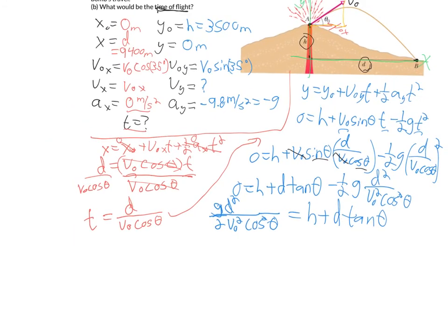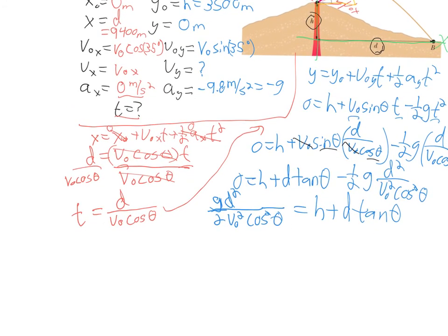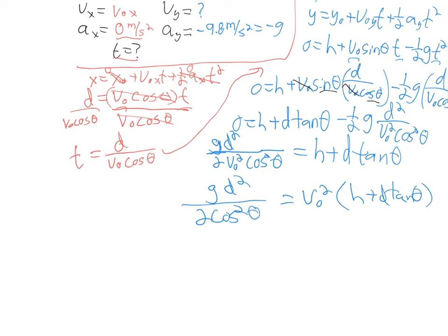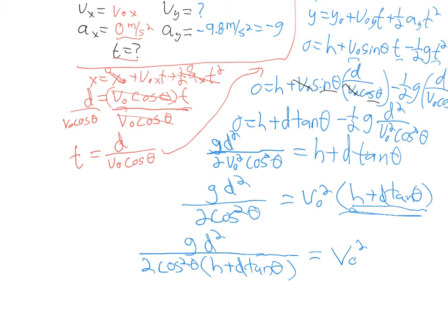So I have 0 equals h plus, still have my d. Don't forget that. d times the tangent of theta. All right, nice. None of this has v initial. So this is getting kind of easy here. Then I have minus 1 half g. And I'm going to distribute my squared. So I have d squared divided by v initial squared and cosine squared theta. All right, maybe just a quick side note on this cosine squared theta here. Just so you know, when you see this cosine squared theta, for those of you that don't remember from algebra, that's the same as saying the cosine of the angle theta, that whole thing's squared. It's just a shorthand way of writing that. Fun side note for you there.